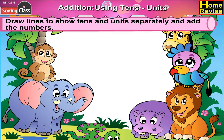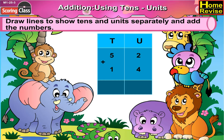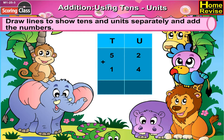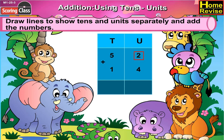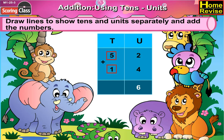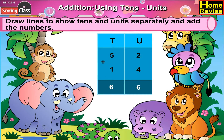Next is 52 plus 14. We will draw a line between 52 and 14. Write units above 2 and 4, and tenths above 5 and 1. 2 plus 4 is 6, 5 plus 1 is 6. So 52 plus 14 is 66.